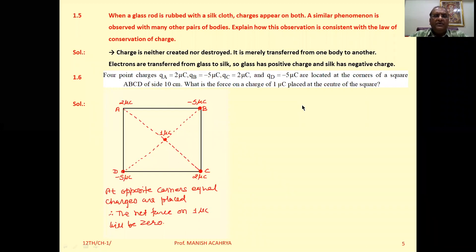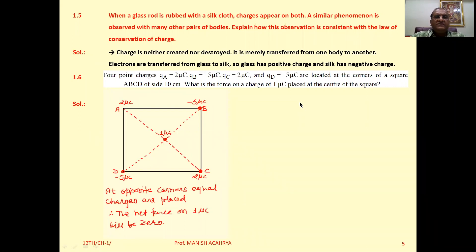Now example 1.5: When a glass rod is rubbed with a silk cloth, charges appear on both. A similar phenomenon is observed with many other pairs of bodies. Explain how this observation is consistent with the law of conservation of charge.